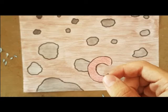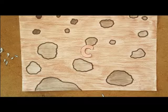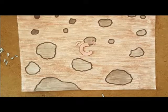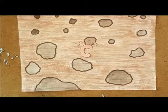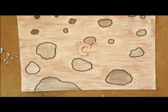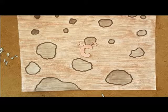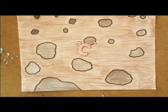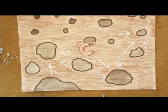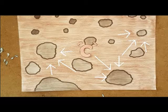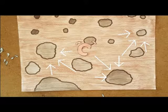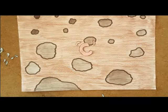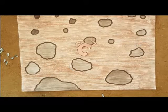The second to last horizon is C, or parent material — the mineral layer, partially altered, containing large bits of the original rock still in process of weathering.